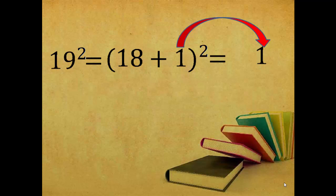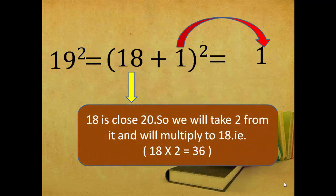And now we have to do some little calculation. See how? As 18 is close to 20, so we will take 2 from it and we will multiply to 18. That is, 18 into 2 is equal to 36.